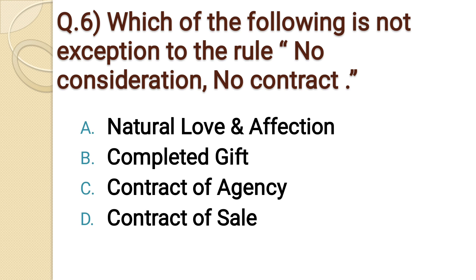Question number six: Which of the following is not an exception to the rule 'no consideration, no contract'? Option A: natural love and affection. Option B: completed gifts. Option C: contract of agency. Option D: contract of sale. The correct option is option D: contract of sale.